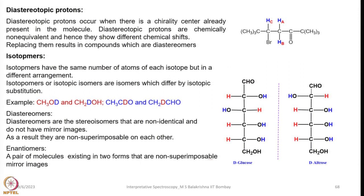Now let us understand a few terms so that understanding their features becomes easier. Diastereotopic protons occur when there is a chirality centre already present in the molecule. Diastereotopic protons are chemically non-equivalent and hence show different chemical shifts; replacing H_A and H_B with something else results in compounds which are diastereomers.